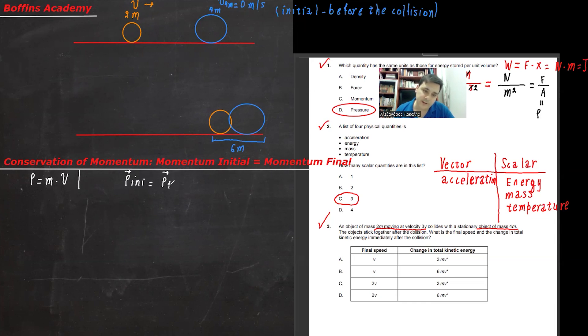Therefore, P initial is equal to P final. We're going to put vectors at the start. But after that, we're going to remove the vectors. We don't need the vectors as long as we have right signs, plus and minus. And the plus and minus signs, you can judge. You can find out what the signs will be if you have a direction.